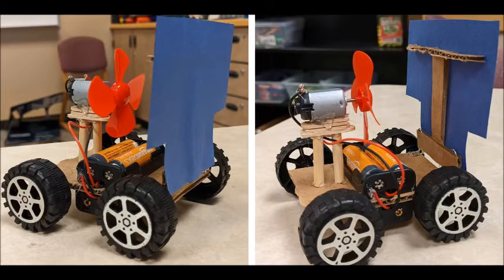So you can see the sail on the right, the blue paper, you can see the turbine on the left. Let's see what happens.